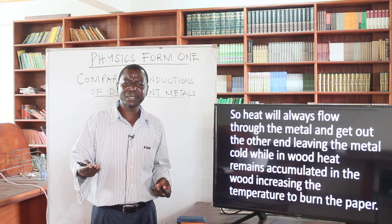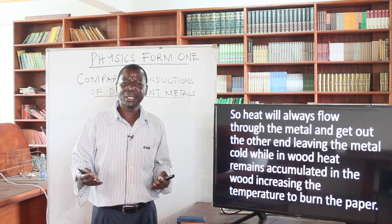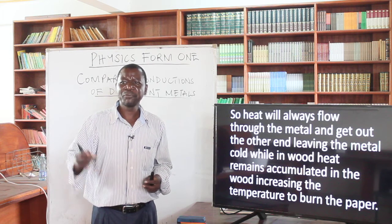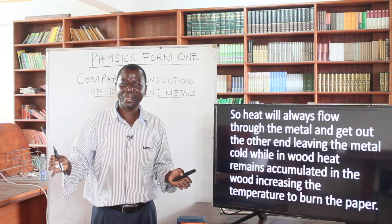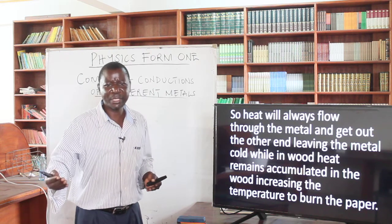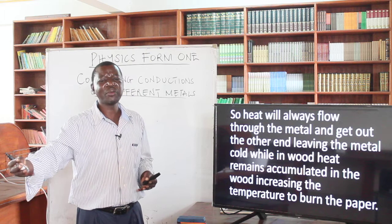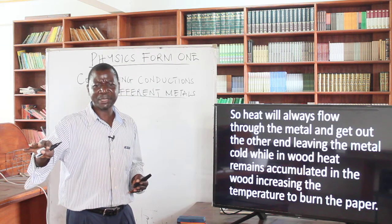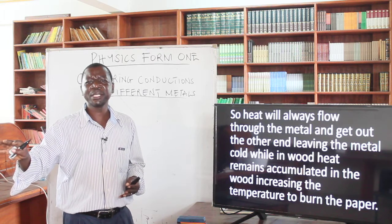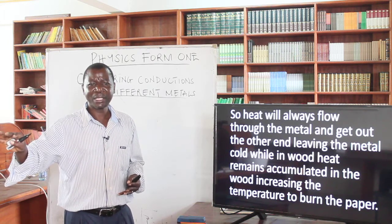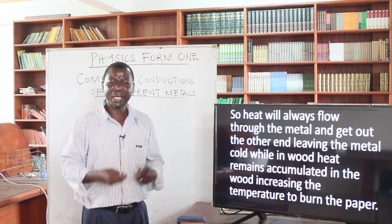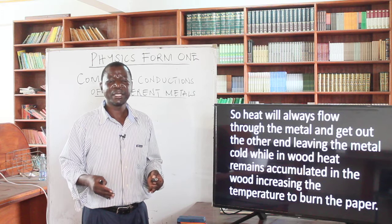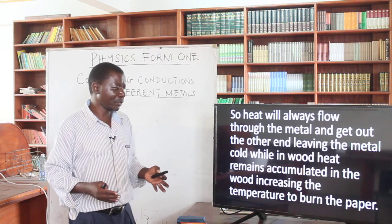Consider this example: during a hot day, when you touch an iron gate it feels much hotter, but if you touch a wooden gate it feels cold. The reason is that heat from the iron gate is conducted to your body, so you feel the heat. With the wooden gate, heat is not conducted to your body — it remains in the wood — so you feel that it is cold. This illustrates the many comparisons we can make about heat transfer in non-metals versus good conductors.